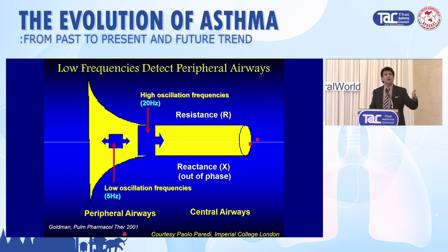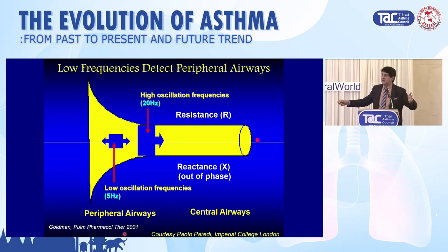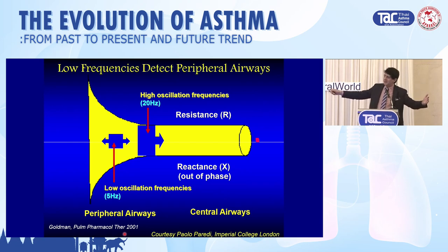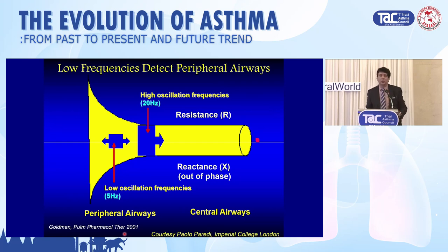But when you pulse gently and slowly at 5 hertz, it goes deeper and you get an assessment of the whole airways. So if you take R20 — resistance at 20 hertz (large airways) — and subtract resistance at 5 hertz (all airways), you get the area which is the small airways. That's the simplicity of oscillometry.